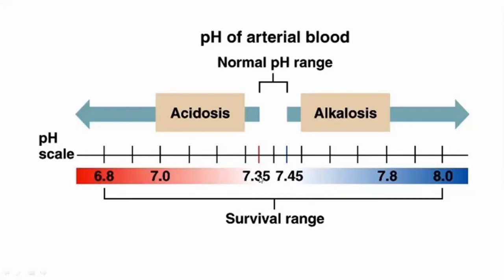If the pH falls below 7.35 on the pH scale — which ranges from 0 to 14 — it leads to acidosis, meaning increased concentration of hydrogen ion. If it rises above 7.45, it leads to alkalosis. The body can resist minor changes; if acidosis occurs, compensatory mechanisms in organs such as the lungs and kidneys will try to manage acidosis and maintain homeostasis. Similarly, if decreased hydrogen ion concentration leads to alkalosis, the body can bear some minute variations and will try to maintain homeostasis.